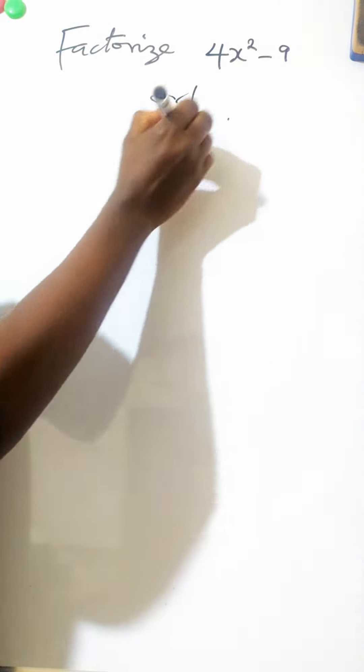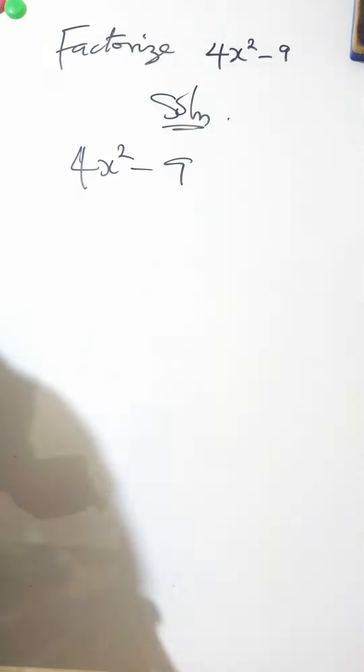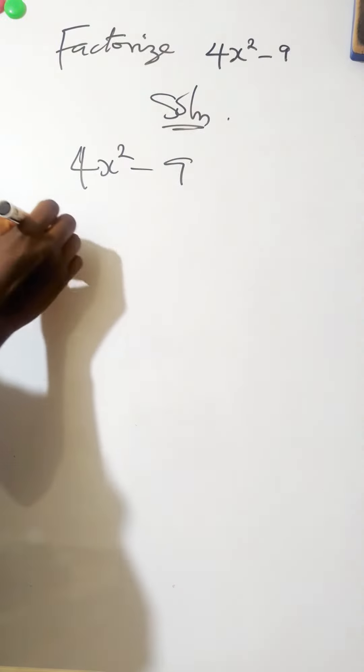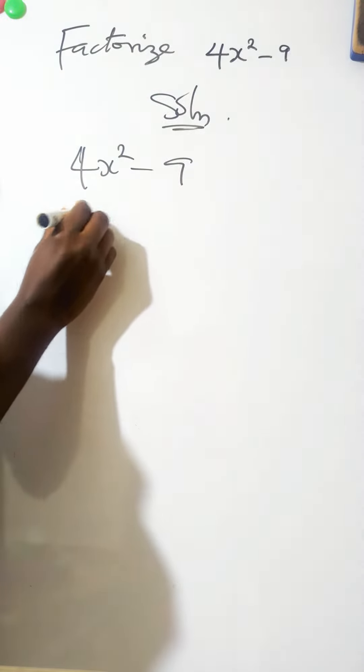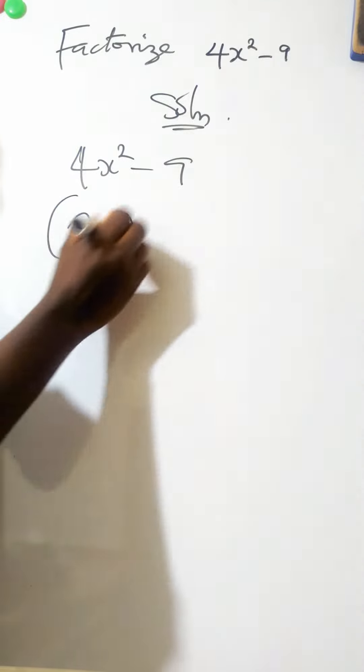So it's actually simple. The question says 4x squared minus 9. Now to factorize 4x squared, 4x squared can also be written as 2x all squared.